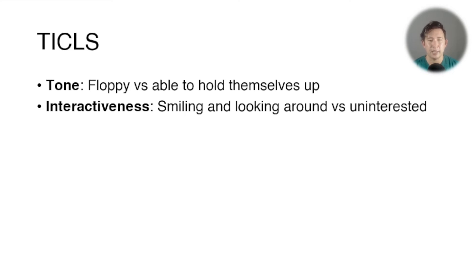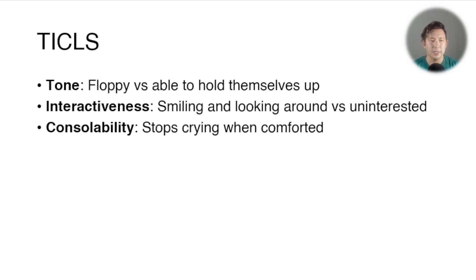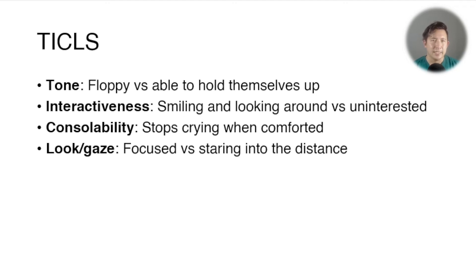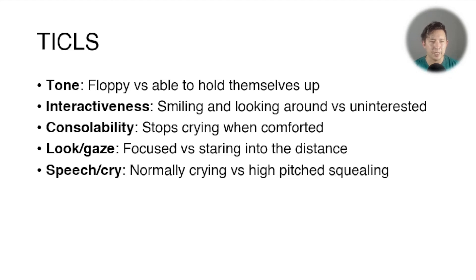Most children should be smiling and looking around — they start to smile from about six weeks — and should look interested in things. If they're not really engaging at all, that's a sign they're more unwell. Consolability: it's normal for children to cry for many reasons, and it's not always concerning; it can be reassuring because it means they're alert. But most children should stop crying when being comforted. If a child is inconsolable and can't be soothed by a parent, that's a worrying sign. Also, most children shouldn't be staring with glazed eyes into the distance; if a young child is doing that, that's another worrying sign.